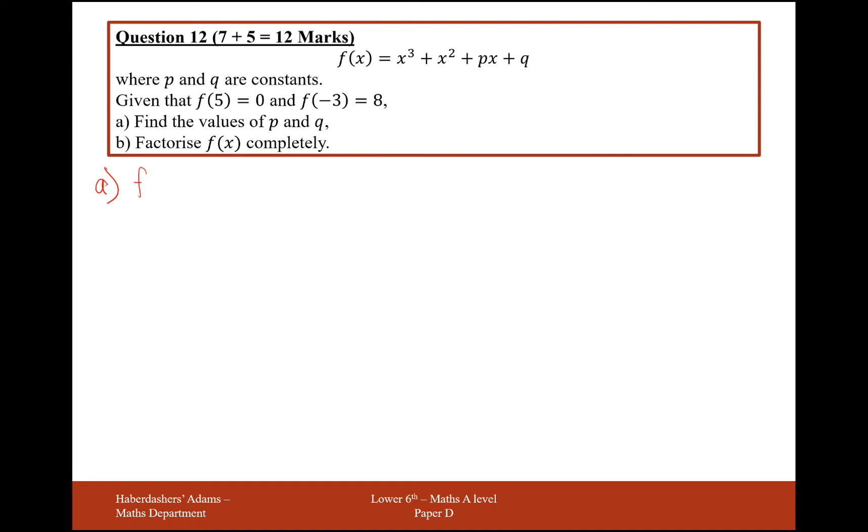So plugging 5 into the function, we're going to get 125 from the x cubed, 25 from the x squared, plus 5p, plus q equals 0, because that's what it has on the end of the function here.